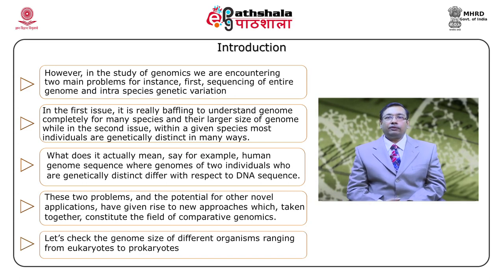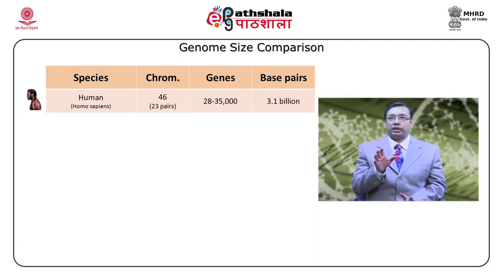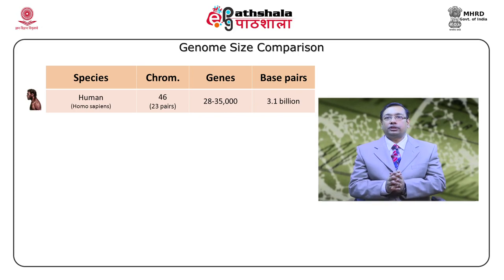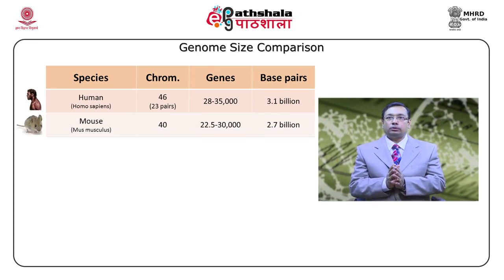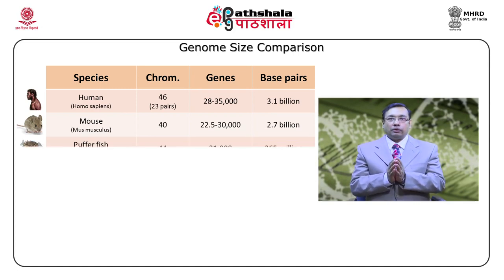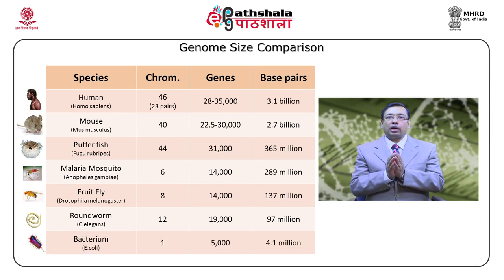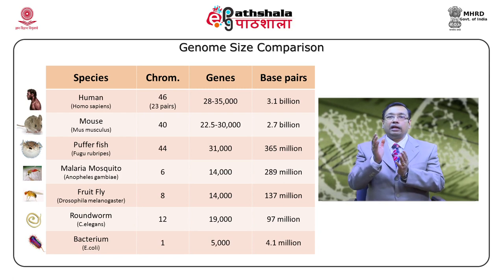Let us check the different genomes in different organisms, starting from eukaryotes to prokaryotes — a genome size comparison. Humans have 46 chromosomes and about 28,000 to 35,000 functional genes with 3.1 billion base pairs. Likewise, mouse has 40 chromosomes, approximately 30,000 functional genes, and 2.7 billion base pairs. Similarly, organisms like Anopheles, Drosophila, C. elegans, and E. coli show variation in chromosome number, functional genes, and base pairs.